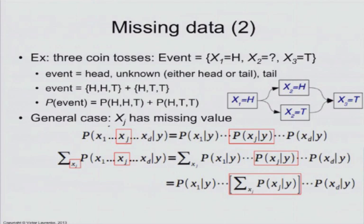And that is 1 because what you're doing is you're summing up over all possible values of xj the probability of that value given the class y. And by definition, this must be equal to 1. So the result is the term xj just cancels out of your equation.